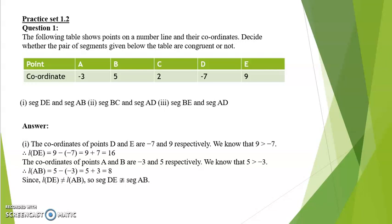Question 1. The following table shows points on a number line and their coordinates. Decide whether the pair of segments given below the table are congruent or not. First, segment DE and AB. The coordinate of point D is negative 7 and the coordinate of point E is 9. We know that 9 is greater than negative 7, therefore length DE is equal to 9 minus negative 7, which is 9 plus 7, equal to 16.